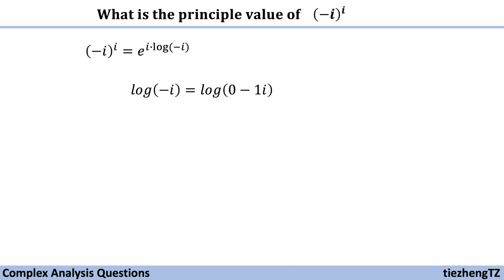Log(-i) equals log(0 - 1i). And we know log(z) = ln(r) + i(θ + 2nπ) in terms of the polar form.